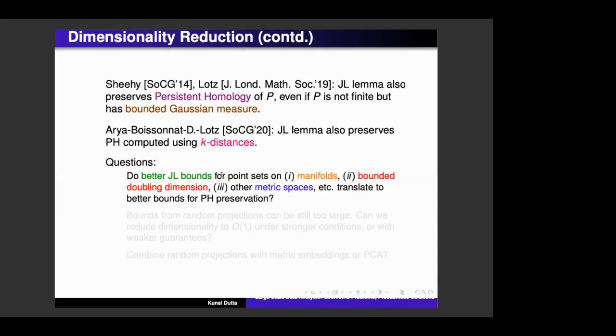And you can still preserve the persistent homology of your point set if you're using k-distances. So there are several questions around this further, which, for example, which are still unanswered. So, for example, if you know that the point set lies on a lower dimensional manifold, so this is exactly the manifold hypothesis, can we still have better bounds than the usual Johnson-Lindenstrauss bound for preserving the persistent homology?